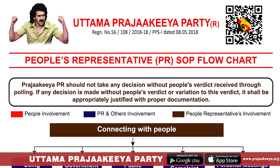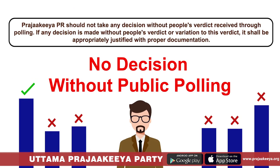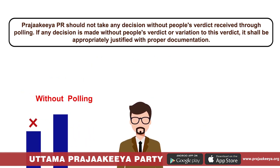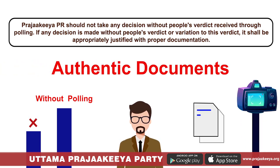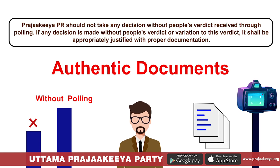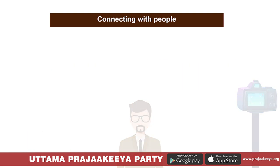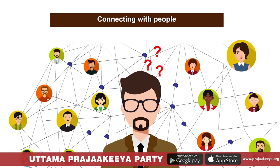Most important in this SOP methodology is that the people's representative cannot take any decision without the people's verdict received through polling. In case any decision is taken without public polling or against public opinion, he has to prove his decision with proper supporting documents. For this polling process, public contact interaction is very important.